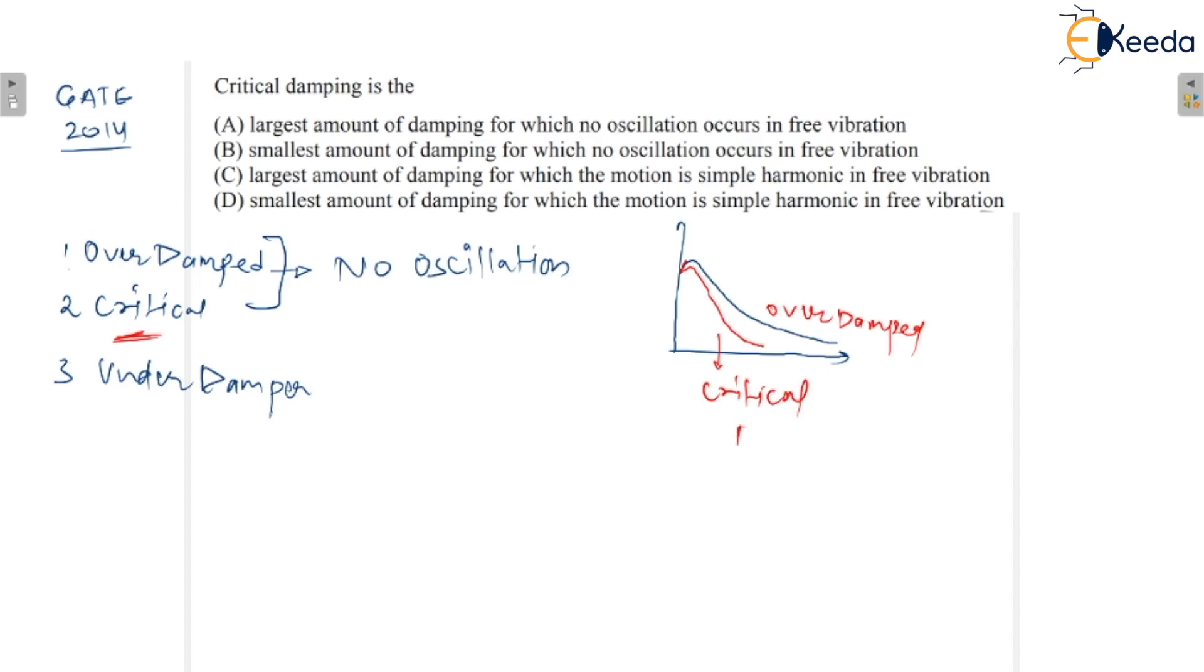So what would be the answer? The answer would be option B. It is the smallest amount of damping for which no oscillation occurs in free vibration. So option B would be the correct answer for this question.